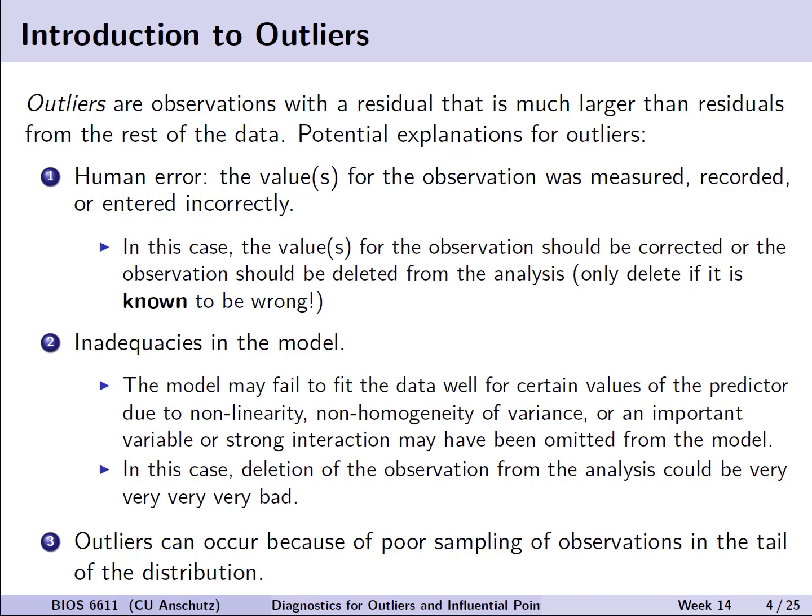We would essentially be removing meaningful information that actually describes the true relationship. The third reason could also be that outliers are occurring because of poor sampling of observations in the tail of the distribution. If we only have one piece of data, it may appear like an outlier when in fact it's just an extreme behavior which a larger sample size may have multiple observations to describe.